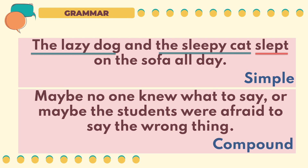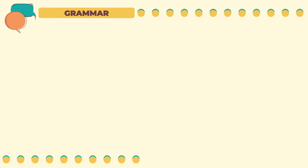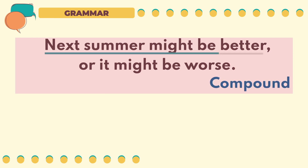This is a compound sentence. The first sentence is 'maybe no one knew what to say,' and the second sentence is 'maybe the students were afraid to say the wrong thing.' These are connected with the coordinating conjunction 'or.' Fifth sentence: 'Next summer might be better, or it might be worse.' This is a compound sentence. The first simple sentence is 'next summer might be better,' and the second simple sentence is 'it might be worse.' These two sentences are joined with the conjunction 'or.'